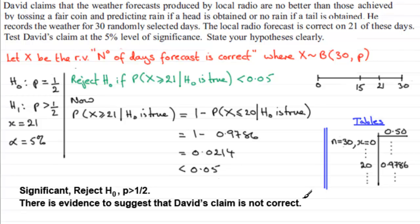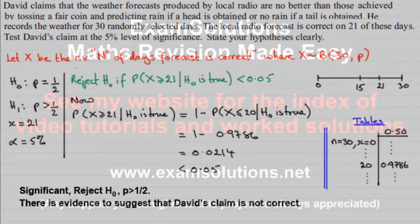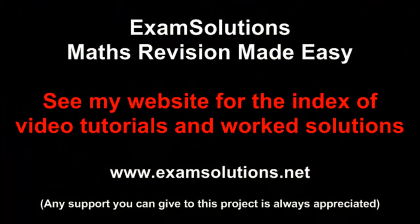So this is one way that you can do this question. The other way is to find a critical region and test to see whether your observed value, 21, is in the critical region or not. And as I said at the beginning of this video, if you're on my website, examsolutions.net, you should be able to see the alternative version for this question. Well, I hope that's been of some use to you in doing it by this method. Thank you.